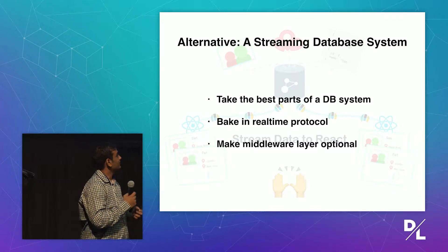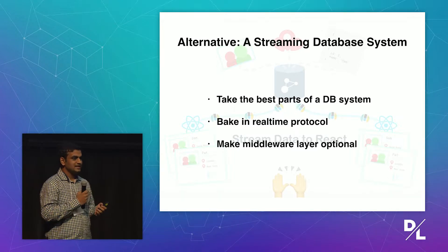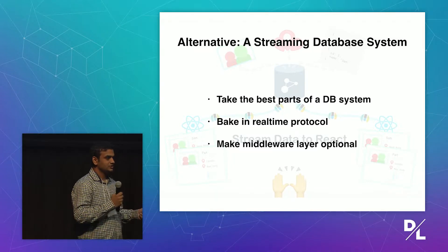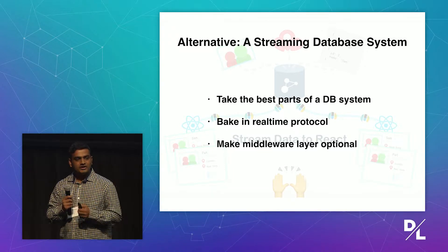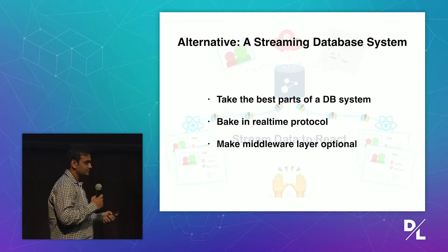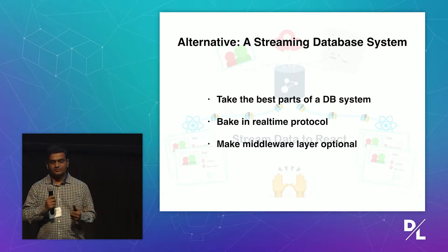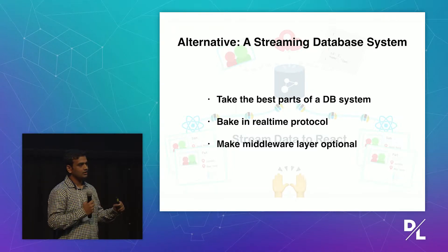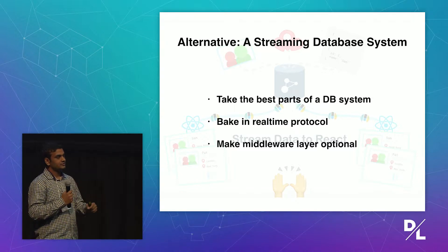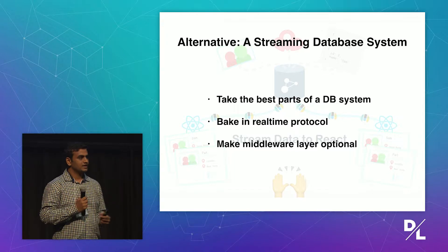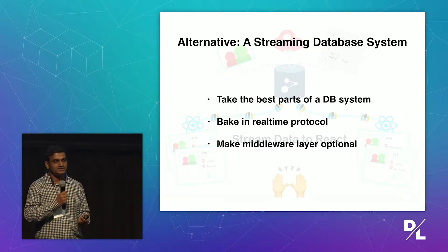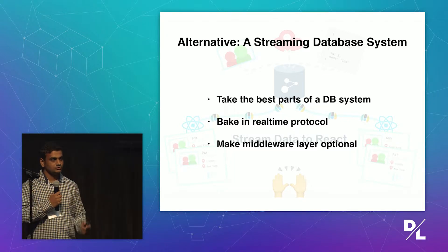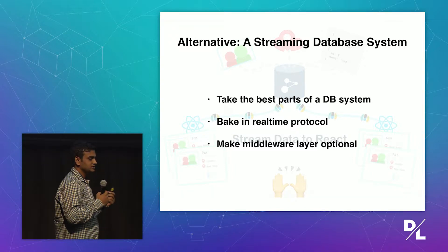So I'm proposing an alternative: why don't we take all the good parts that databases already have? Databases are incredibly good at distribution — they are the best distributed systems, with powerful querying APIs refined over 30 to 40 years. Why don't we bake the real-time protocol within the database system itself, so we don't need faulty middleware that loses the guarantees the database came with? That is what we do at Appbase.io, a hosted version of real-time Elasticsearch.